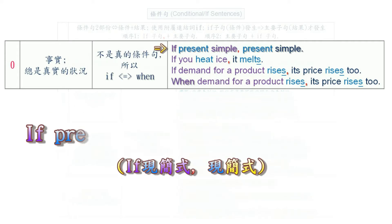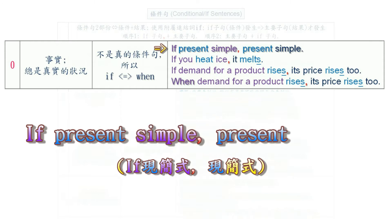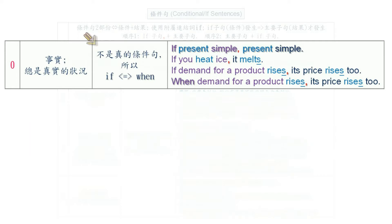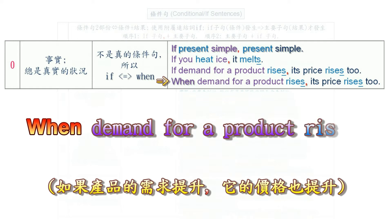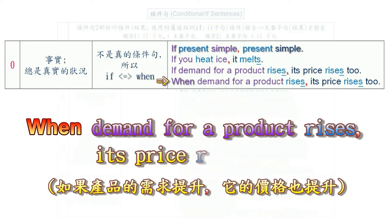In the zero conditional, you use the present simple in the if clause, and the present simple again in the consequence clause. In this sense, it's not a real conditional. For the zero conditional, it is also possible to use 'when' instead of 'if'. For example: 'When demand for a product rises, its price rises too.'